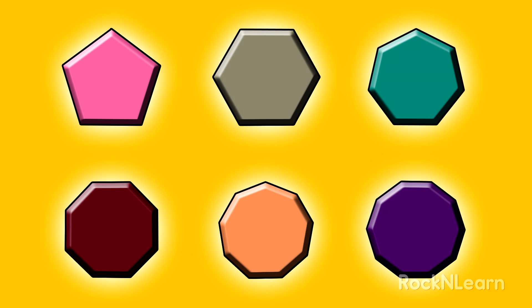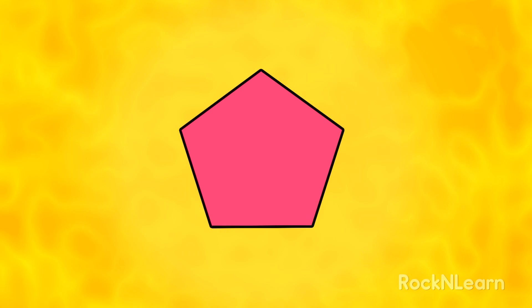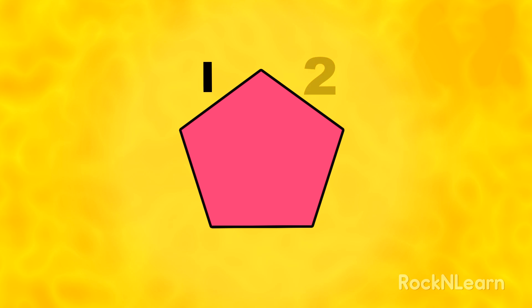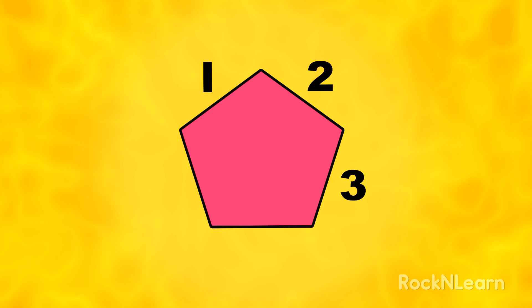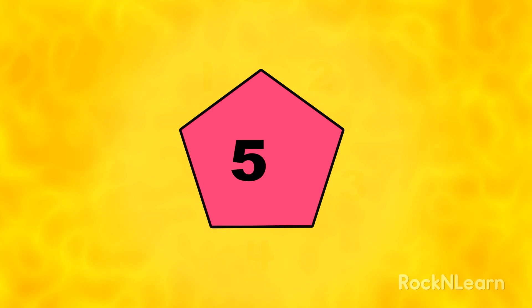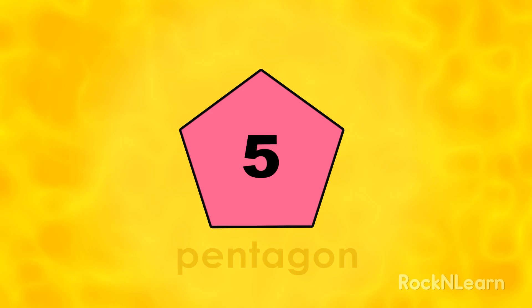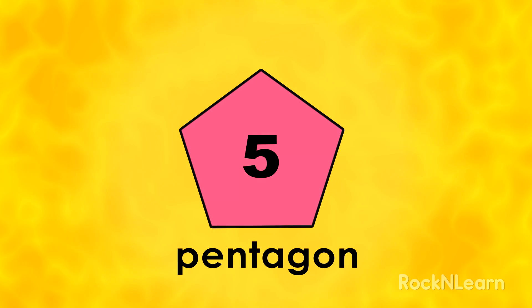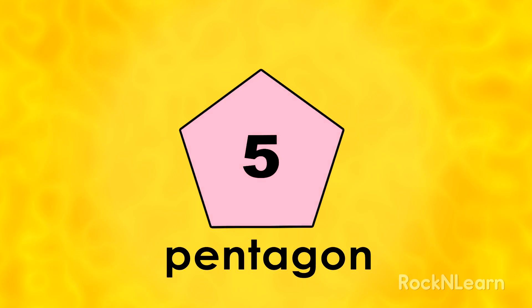Point to the pink shape. Let's count the sides. One, two, three, four, five! A shape with five sides is called a pentagon. Pentagon!